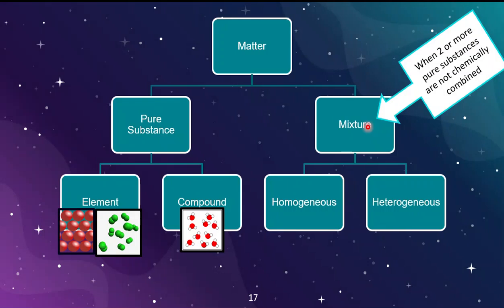Now let's take a look at mixtures. Mixtures are when you have two or more pure substances — two or more different ones — put together and not chemically combined. You could have two different compounds, or three different elements mixed with three different compounds. The ratios don't matter — it's still a mixture as long as you have two or more different pure substances physically mixed and not chemically combined.